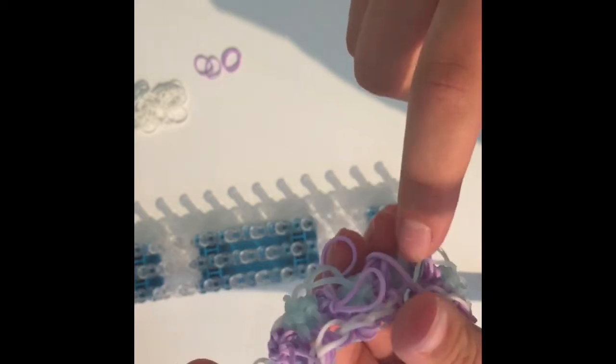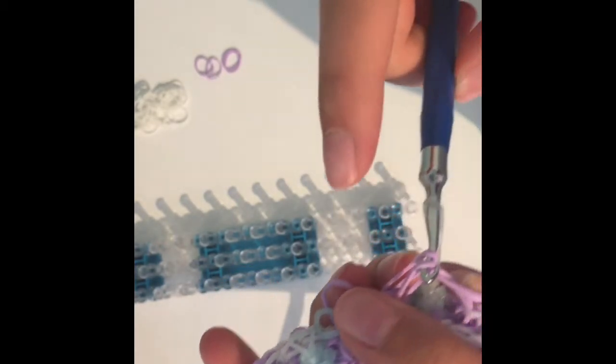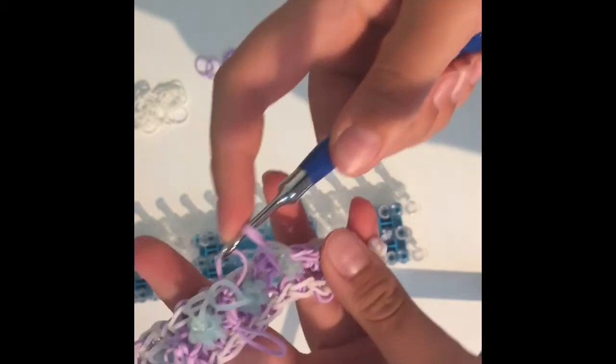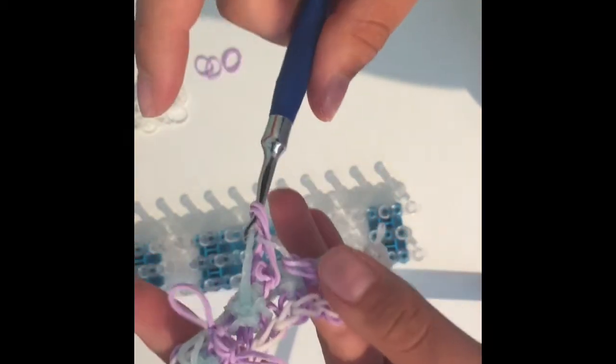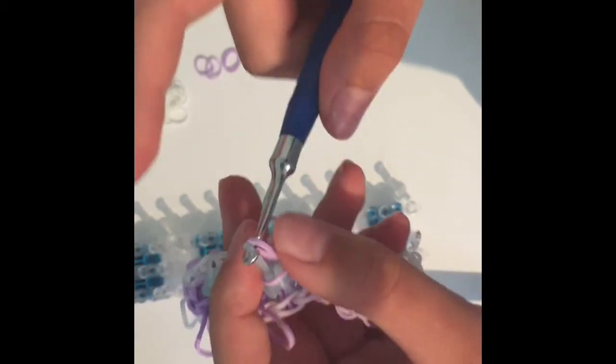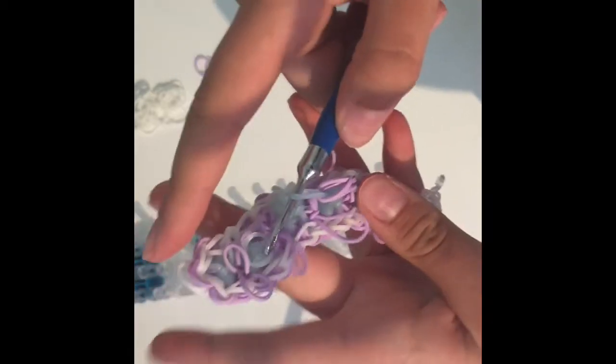Then keep them both on your hook and grab your next blue band and pull it through. Then your next purples, and then your next blue. And you're just going to keep doing this the whole way up to make this neat and come back to me when you're done with this little stitch.